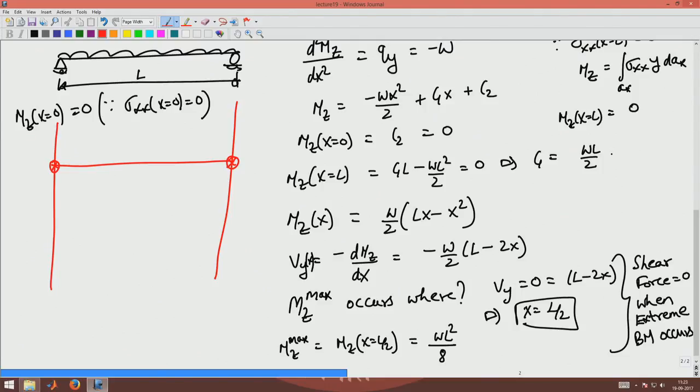Hence what happens is the tension occurs at the bottom. So we will plot the positive bending moment at the bottom and negative bending moments at the top. So at L by 2 you have W L square by 8, this occurs at L by 2. Now it is a parabolic equation so it is not a linear equation. It becomes a parabolic curve like that.